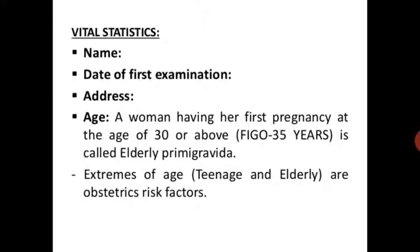Vital statistics: first, the patient's name, date of first examination, address, and age. A woman having her first pregnancy at age 30 or above is called an elderly primigravida. Extremes of age — teenager or elderly — are obstetrical risk factors.